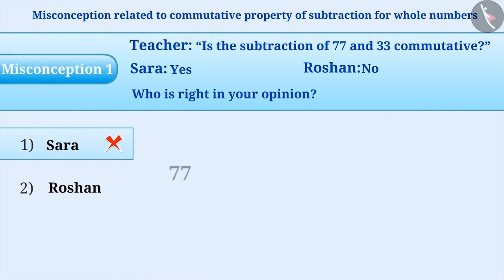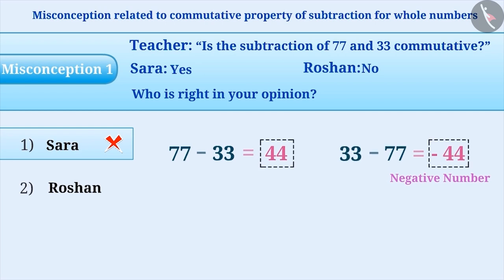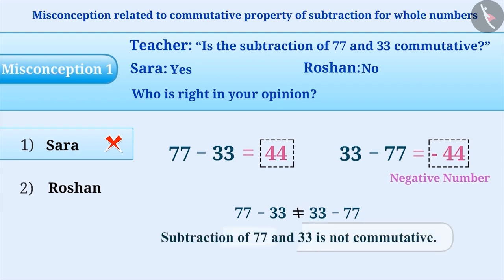The correct understanding is that 77 minus 33 is equal to 44. However, 33 minus 77 is not equal to 44. In fact, the result is a negative number, minus 44. We will learn about the negative numbers in the upcoming chapter. Since the result of 77 minus 33 is not equal to 33 minus 77, the subtraction of 77 and 33 is not commutative. With this understanding, Roshan has given the correct answer.